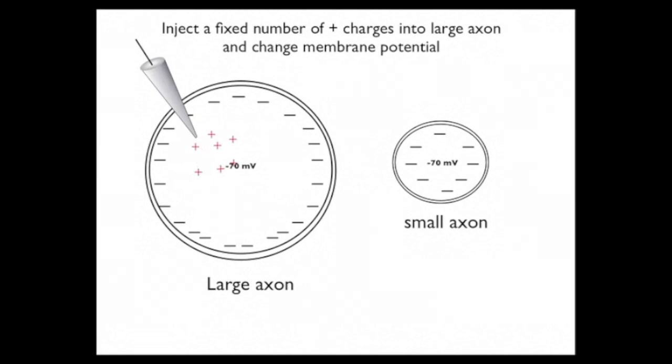Those positive charges are going to be attracted to the negative charges on the inside of the membrane, and they're going to negate some of them. But this is a large axon with lots of negative charges.